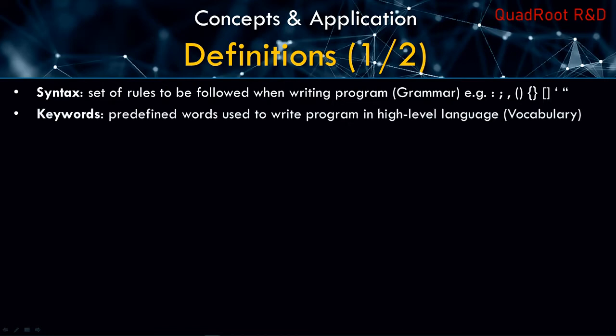Then you have keywords, which are predefined, built-in words used to write a program in your language — it's the vocabulary of the language. Now syntax and keywords are different for each programming language. Some may be similar or even identical, but capitalization may differ.